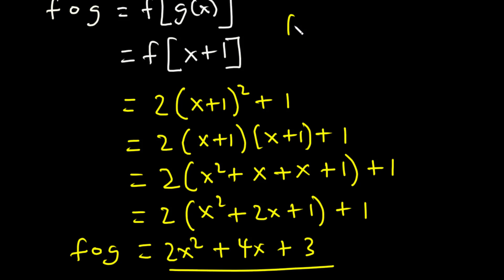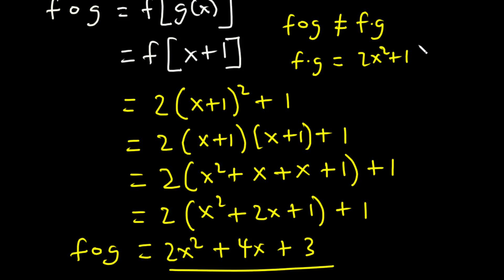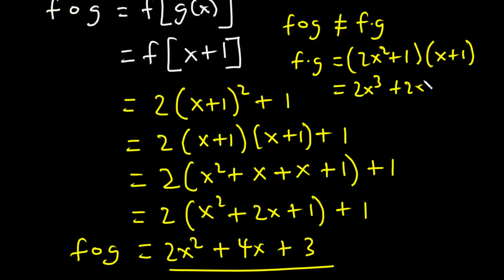Notice that f of g is not equal to f dot g, which is f times g. f dot g equals (2x² + 1)(x + 1). Multiplying: 2x² times x is 2x³, 2x² times 1 is 2x², 1 times x is x, and 1 times 1 is 1. So f dot g = 2x³ + 2x² + x + 1, which is not equal to f of g.